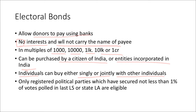Only registered political parties are eligible to receive electoral bonds. They should have secured not less than one percent of the votes polled in the last Lok Sabha or state legislative assembly elections. So parties that have secured one percent of votes in parliamentary or state legislative assembly elections are eligible.